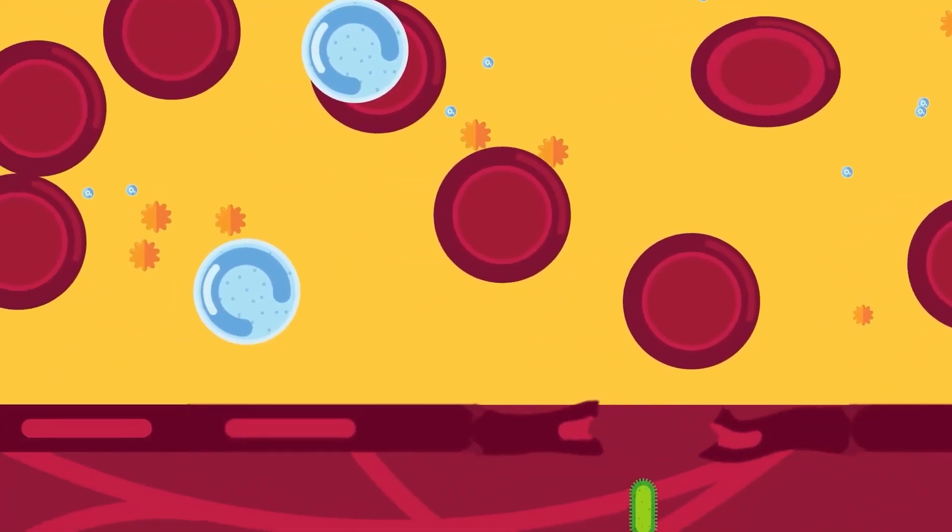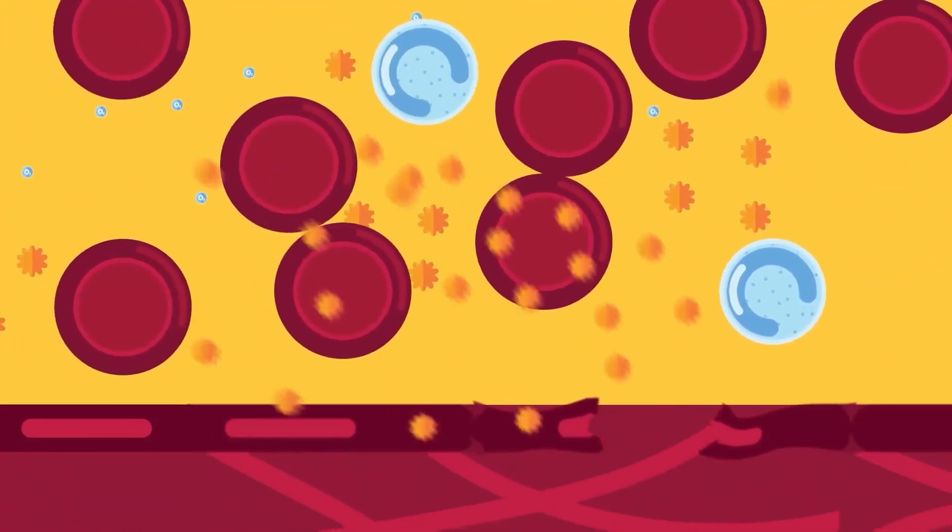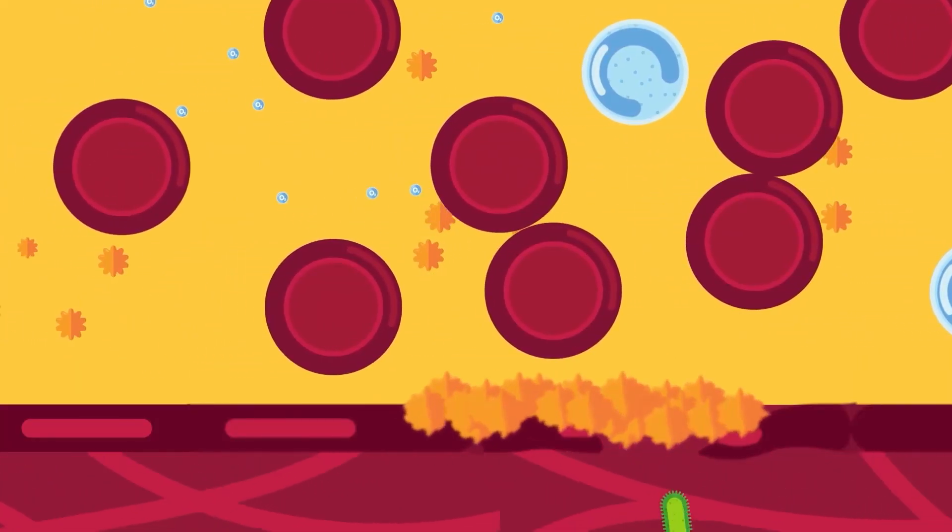White blood cells help your body fight infections. Platelets are tiny molecules that stick together and build a clot on bleeding wounds.